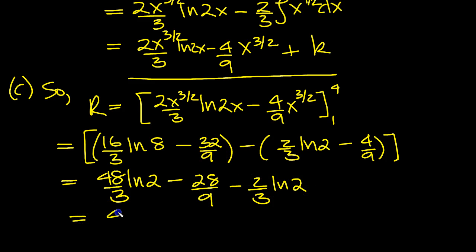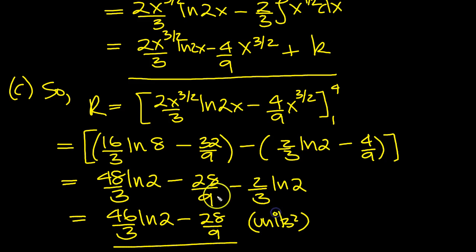So we end up with 46 over 3 ln 2 minus 28 over 9 units squared, because it's a measure of area. The only tricky thing was here, which was 2 cubed in our mind's eye. And the power rule comes down to make 48 over 3 there. So that's fine.